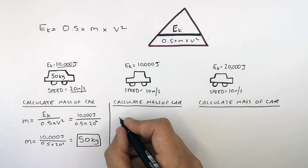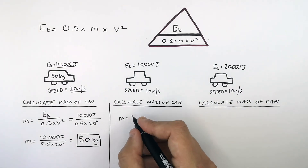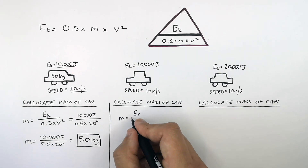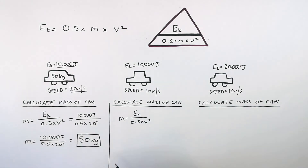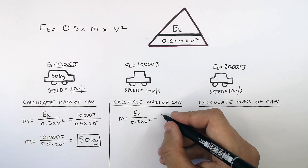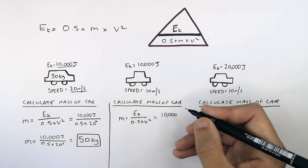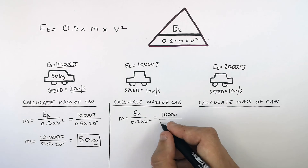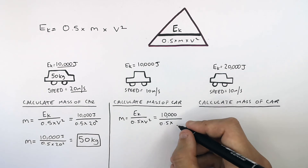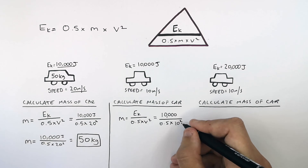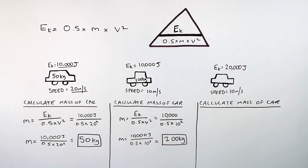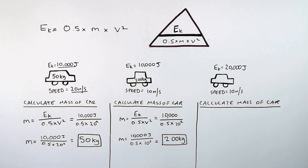So remember to cover M, and you're left with mass equals kinetic energy divided by 0.5 times V squared. Substituting in the numbers: 10,000 joules kinetic energy divided by 0.5 times the speed 10 — but remember it's V squared, so it's 10 squared. So mass equals 10,000 divided by 0.5 times 10 squared, which gives you a mass of 200 kilograms.